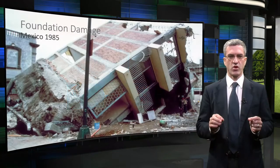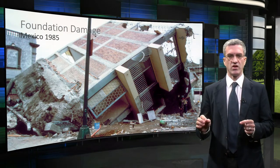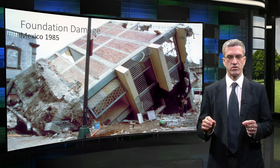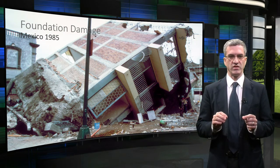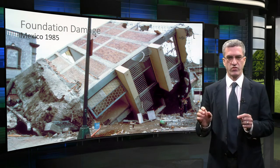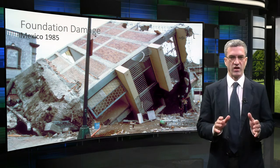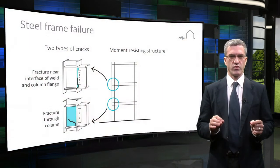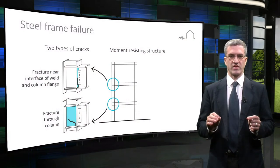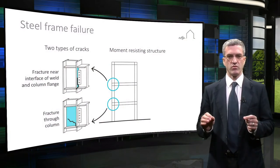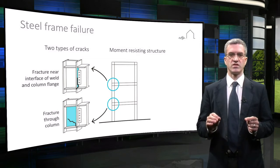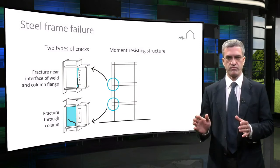Improvements in code provisions are driven largely by learning from major earthquakes around the world. For example, the 1985 Mexico City earthquake highlighted the importance of soil response. The Northridge earthquake of 1994 showed that steel moment frames, which had been believed to be highly ductile, were susceptible to brittle fracture.